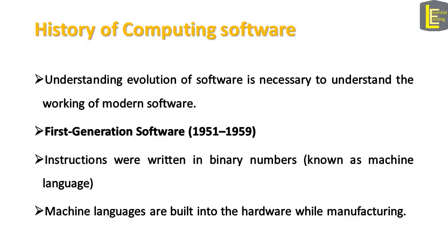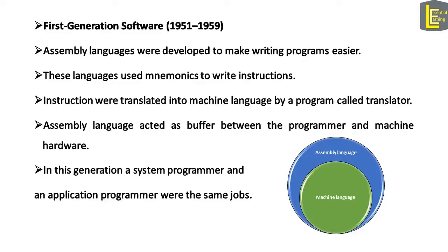Since the first commercial computer, software has evolved more than the hardware. Understanding the evolution of software is necessary to understand the working of modern software. The first generation of software is considered to occur at the same time as the first generation of computer devices. Instructions were written in binary numbers, also known as machine language. These languages are built into hardware while hardware is manufactured in a factory. Since writing programs in machine language was harder, assembly languages were developed to make writing programs easier. These languages used mnemonics to write instructions, translated into machine language by a program called a translator. In this generation, system programmer and application programmer were the same job — only computer people could program computers.